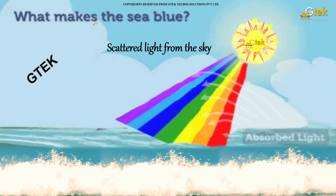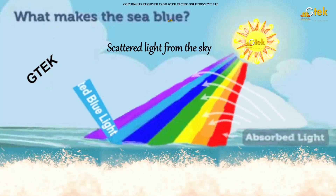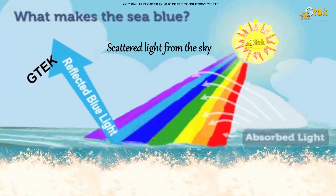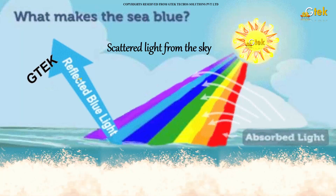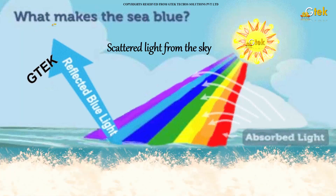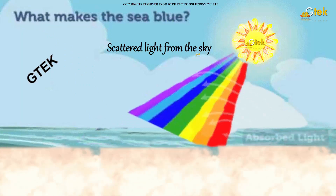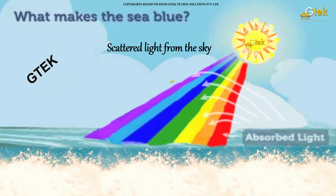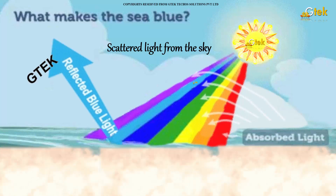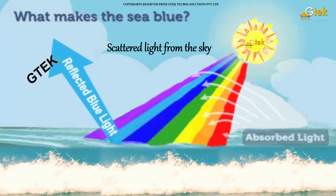So this is the question: what makes the sea blue? When sunlight is present, the sea waves are reflecting blue light, which is the scattered light from the sky. These other wavelengths are considered absorbed, and the reflected light is blue light.